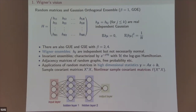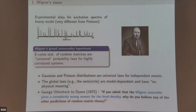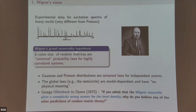Wigner was faced with the problem of spectral statistics and wanted to model nuclear energy levels. He invented random matrix models to use eigenvalue distributions to model these spikes. Interestingly, he started with the random Schrödinger equation, but couldn't solve it, so he switched to random matrices where he could compute probabilities. He then made the broad hypothesis that a highly correlated system would have spectral statistics given by random matrices.